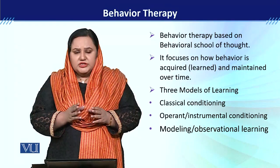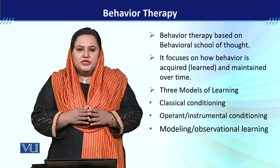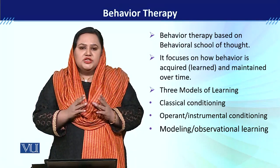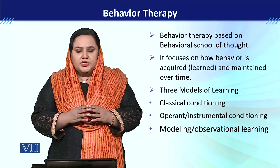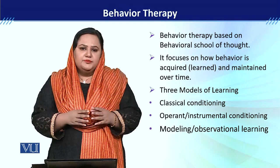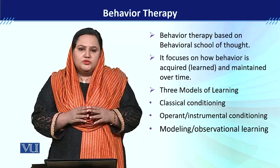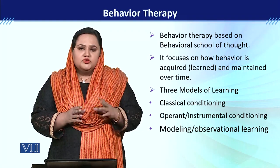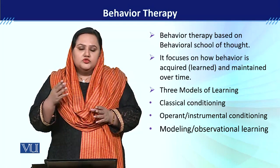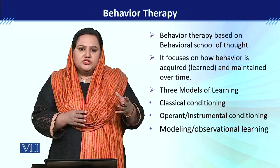इसी तरह जब हम modeling और observational learning की बात करते हैं, तो इसका मतलब ये होता है कि any person can learn behavior through imitation - यानी जो भी उसके सामने हो रहा होता है, वो उसे observe करता है और learn कर लेता है. ये चीज़ें इसलिए important हैं क्योंकि behaviorists कहते हैं कि maladaptive behaviors भी learned होते हैं. तो अगर किसी के behavior को change करना है, तो उसके learning pattern को change करना होगा, ताकि वो adaptive functioning का behavior learn करे और exhibit करे.